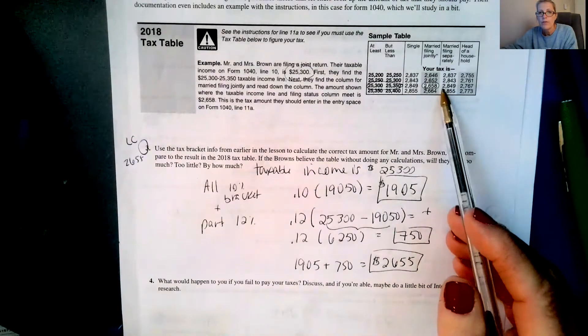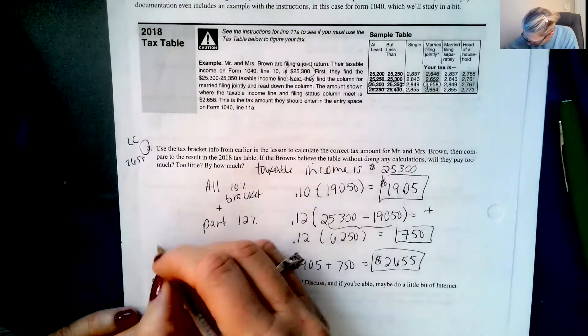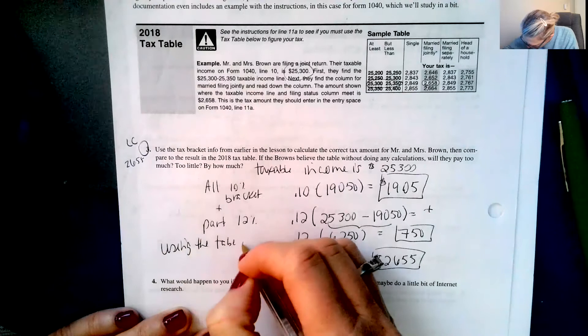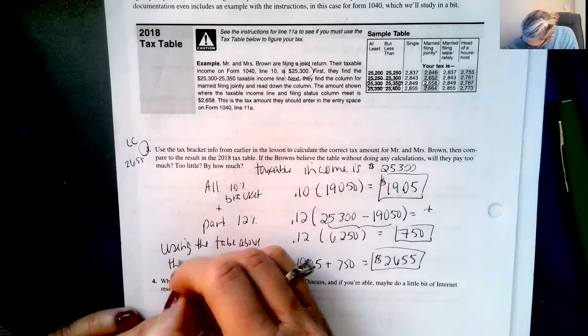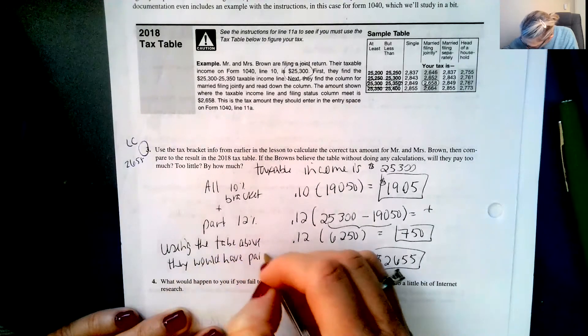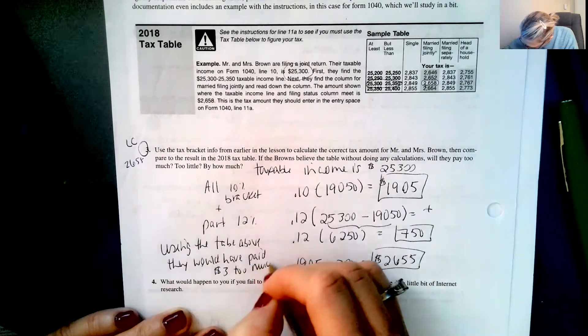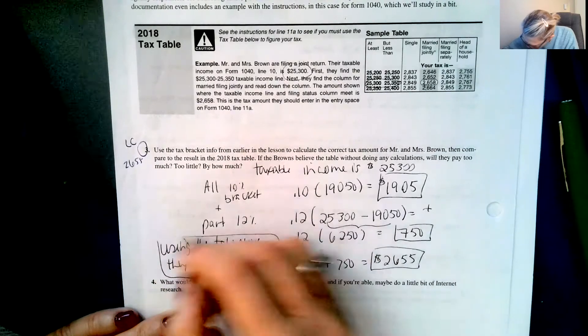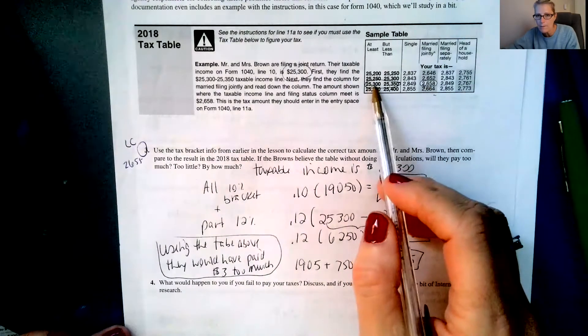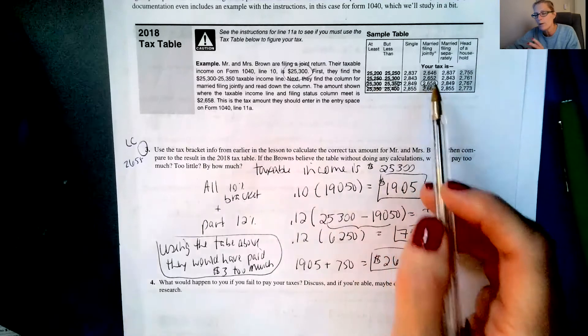So we have to add them. So $1,905 plus $750 is $2,655. So they would have paid $2,658 using the table above, they would have paid $3 too much. And so that's the kind of the disadvantage of using the table. That's because they fell at the bottom of this bracket. If they actually made closer to the upper of their bracket, they would have been closer to the correct amount.